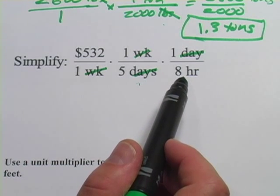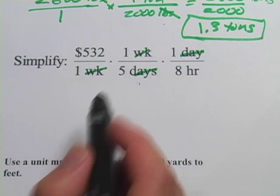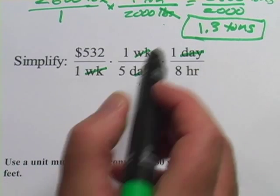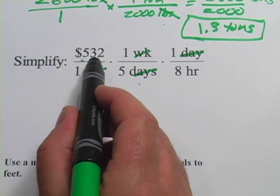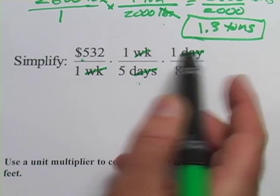Now to do the math, to actually figure this out, we just have to multiply across the top of the fraction, across the bottom of the fraction, and then do the division. So this top is 532 times 1 times 1, that's just 532.